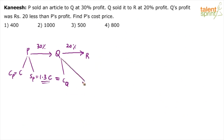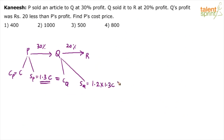What will be the selling price of Q? The profit is 20%, so the selling price is 120% of the cost price — 1.2 times the cost price. Cost price of Q is 1.3C, so the selling price of Q is 1.2 × 1.3C = 1.56C.